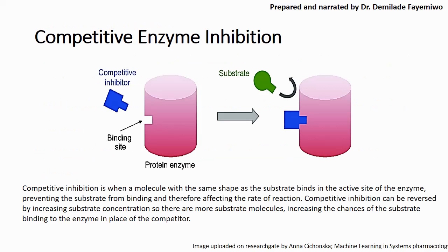So let's look at competitive inhibition. If you look at the image posted here, you can see that the purple cylinder is the enzyme and you have a blue molecule called a competitive inhibitor. On the right side, you can see that there's also a substrate. In competitive inhibition, you simply have a molecule that has the exact same shape as the substrate and is able to fit into the active site of the enzyme.